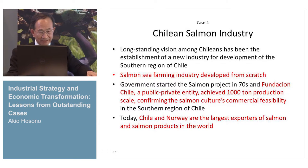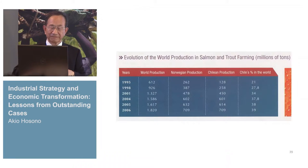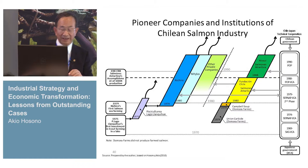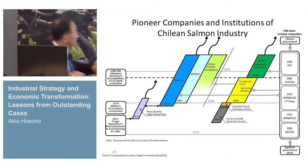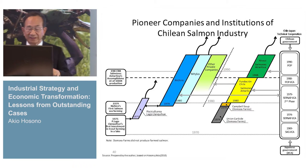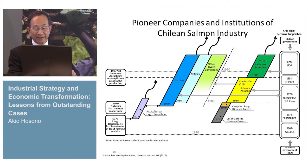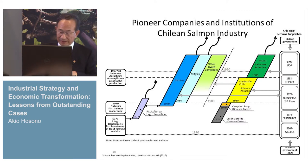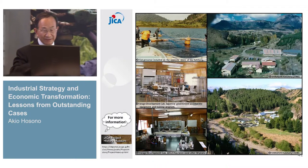The fourth case is the Chilean salmon industry. In Chile, there was no salmon, but it was started with salmon eggs brought from Japan. Today, Chile and Norway are the two largest salmon exporters in the world. From zero — how was it developed, and how was technology disseminated? Fundacion Chile, the public-private entity, was very important in supporting the establishment of the salmon industry and private companies. Technologically, JICA and the Chilean government cooperated on technology transfer for 20 years. The process involves hatcheries, and today it is a very modern, computer-automated process.